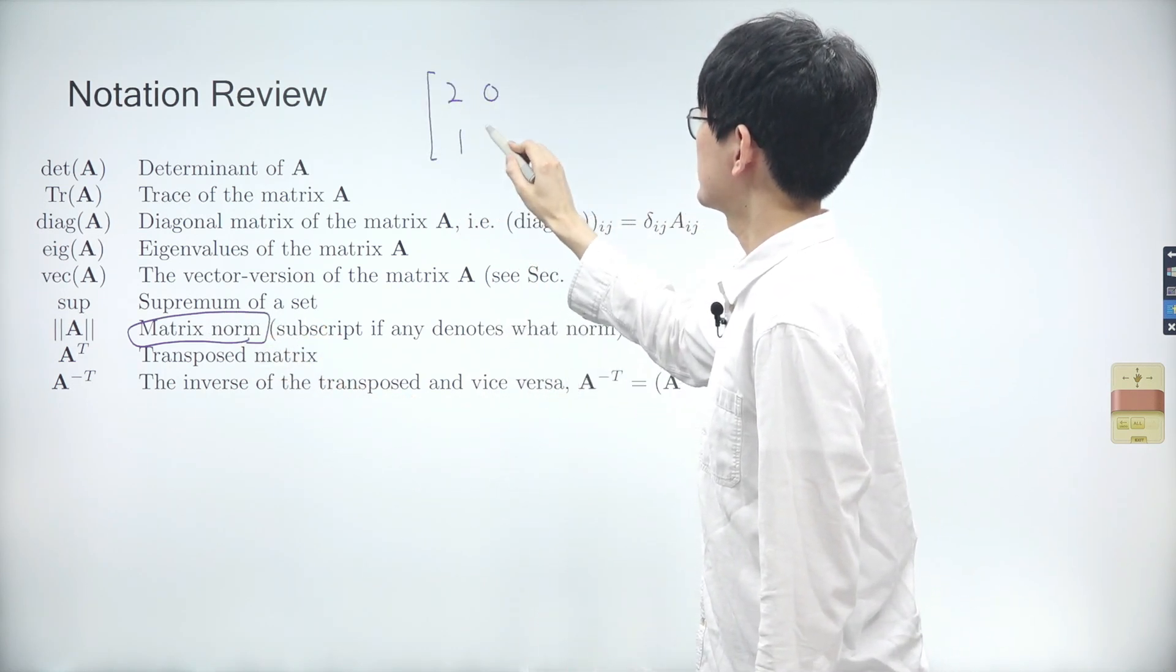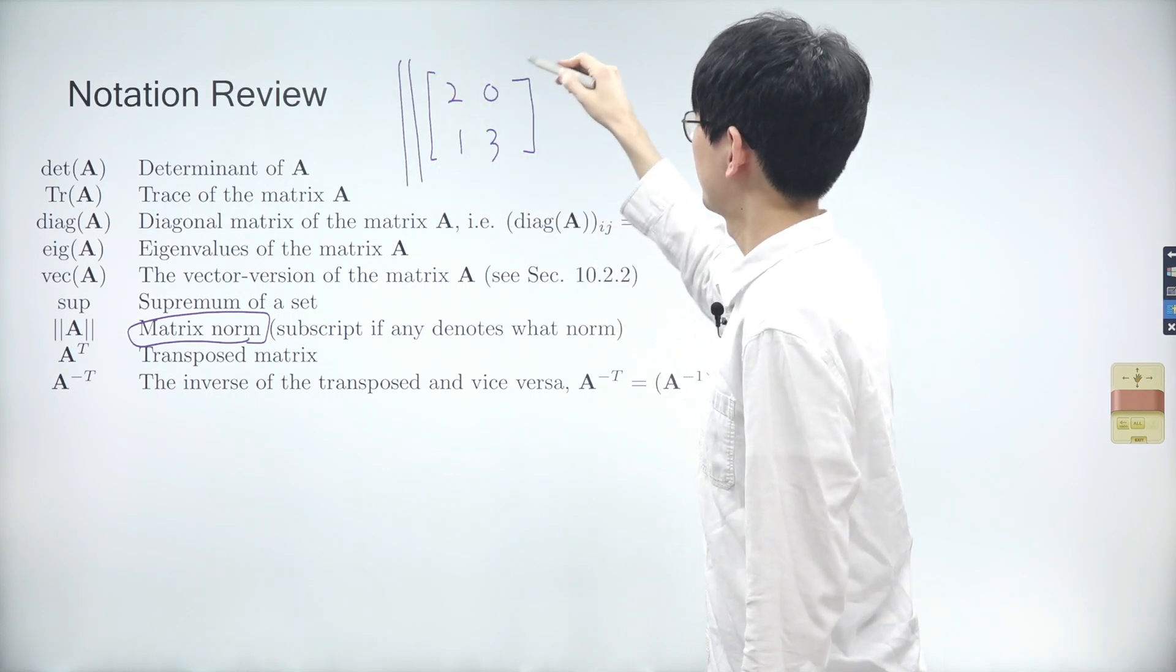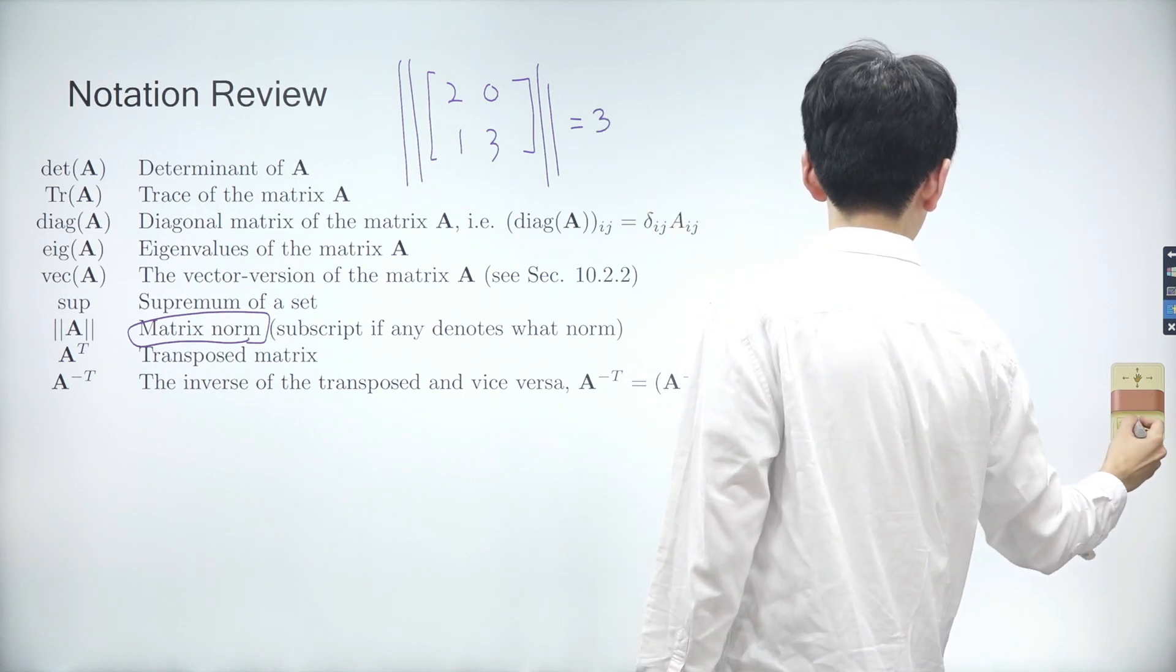But keep in mind that a general matrix norm without a subscript is the largest value in the matrix. For example, the matrix norm of a matrix containing 2, 0, 1, and 3 is 3, since 3 is the largest value.